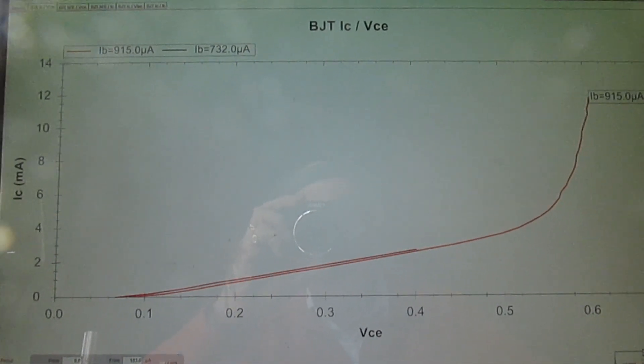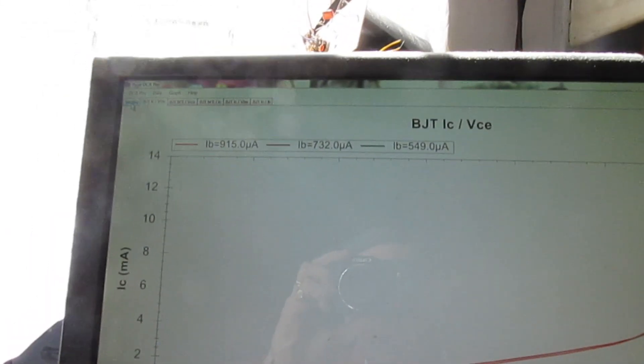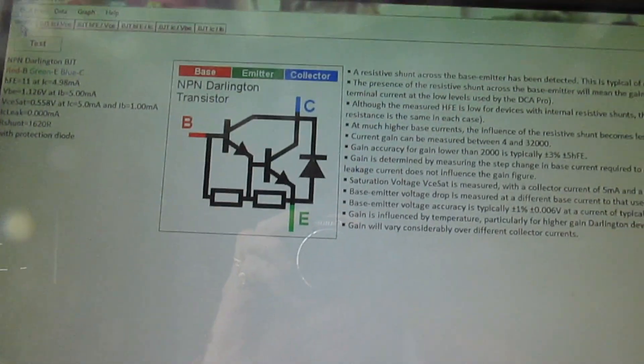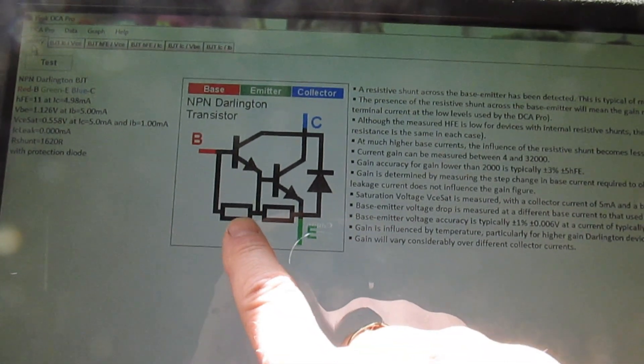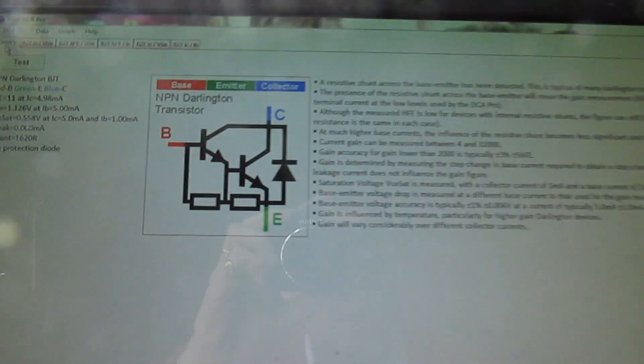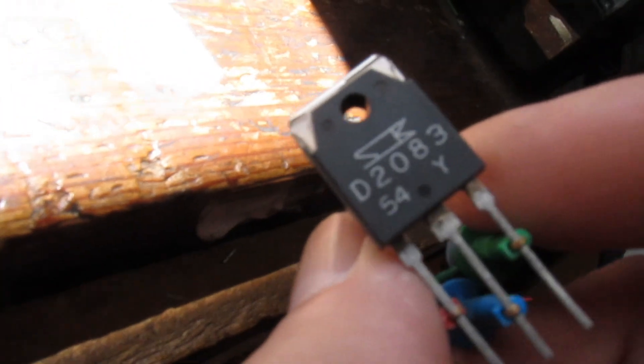Let's click on Identity in the corner here, and that comes up with the NPN Darlington just as it did on display but a lot bigger here. We've got two resistors, an internal diode, two transistors connected as a Darlington pair. That's the genuine Sanken one.